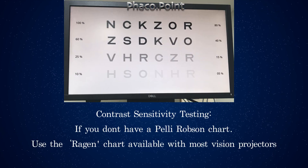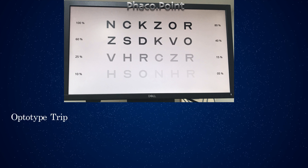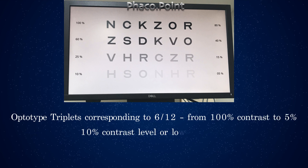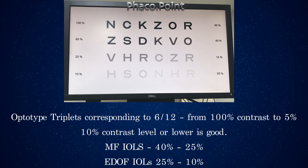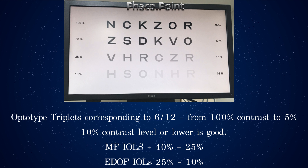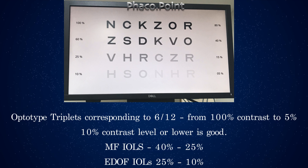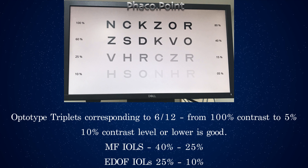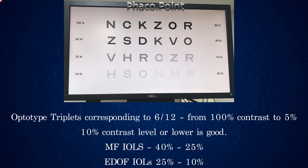Also include a well-worded questionnaire assessing photic phenomena that the patient encounters. For contrast sensitivity testing, if you don't have a Pelli-Robson chart, you can use the chart present in most cabinet-type vision drums. It has 612 optotype triplets presented at varying levels of contrast from 100% to 5%. If a patient can see at 10% contrast or less, they have good contrast sensitivity. Most multifocal IOLs yield contrast sensitivity at 40% to 25%, while EDOF lens patients can see at 25% to 10% contrast levels.